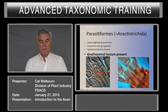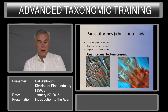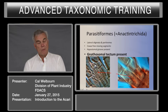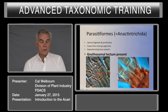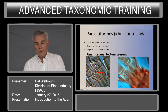Gnathosmal tectum — this is on the upper side of the gnathosoma. This is a structure that covers over part of the dorsal gnathosoma. It can be very simple or ornamented with projections. You can see here three projections on this particular tectum. In this view over here, the tectum is very reduced and can be very difficult to see.